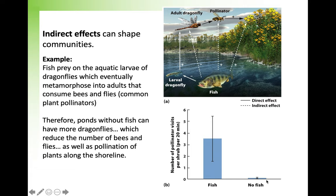Fish prey on the aquatic larvae of dragonflies. When they turn into adults, those dragonflies would normally consume pollinators. If you look at this graph, showing both direct and indirect effects, the arrows show the direction and whether the effect is positive or negative. Ponds with no fish end up having more dragonflies, which decreases the pollinators and also decreases the pollinating plants along the shore. So the presence of fish can actually help establish healthy plants along the shoreline, even though that's a very indirect effect.